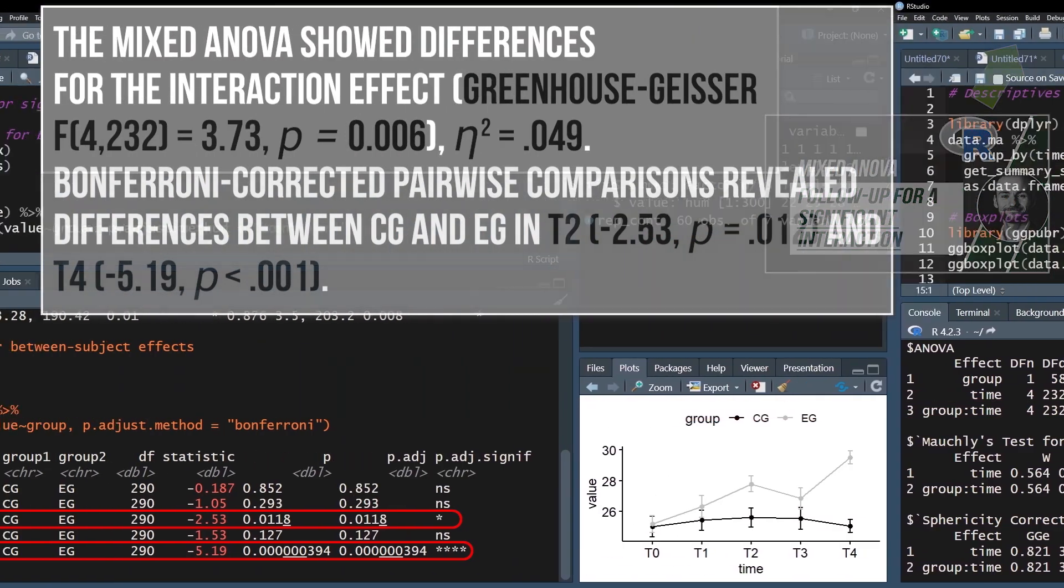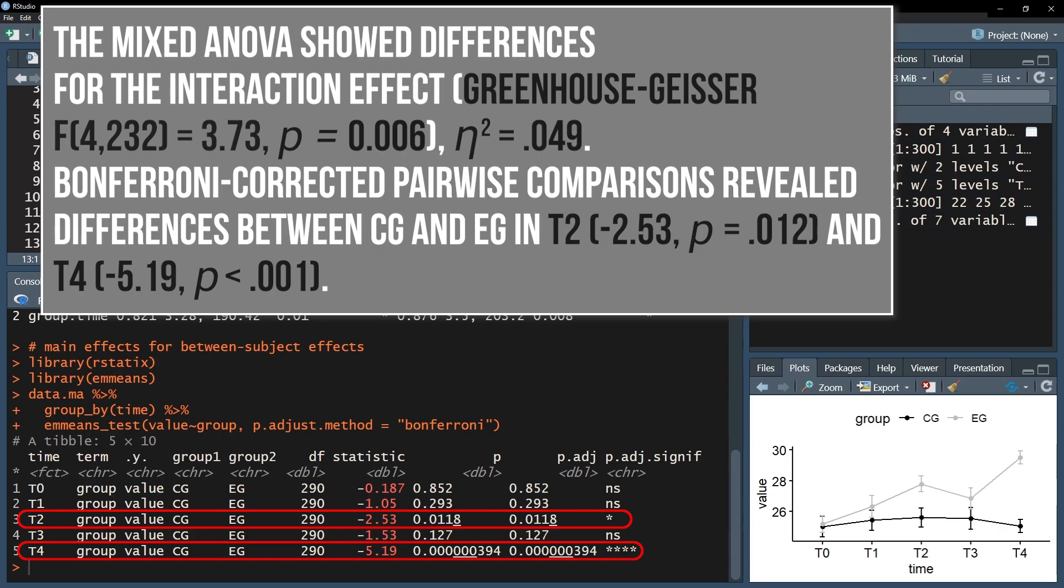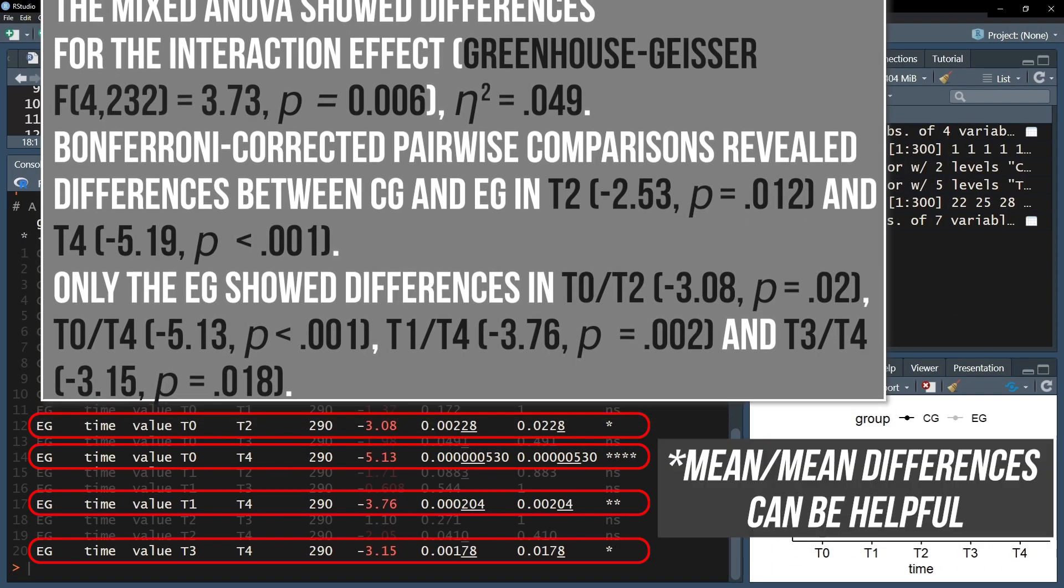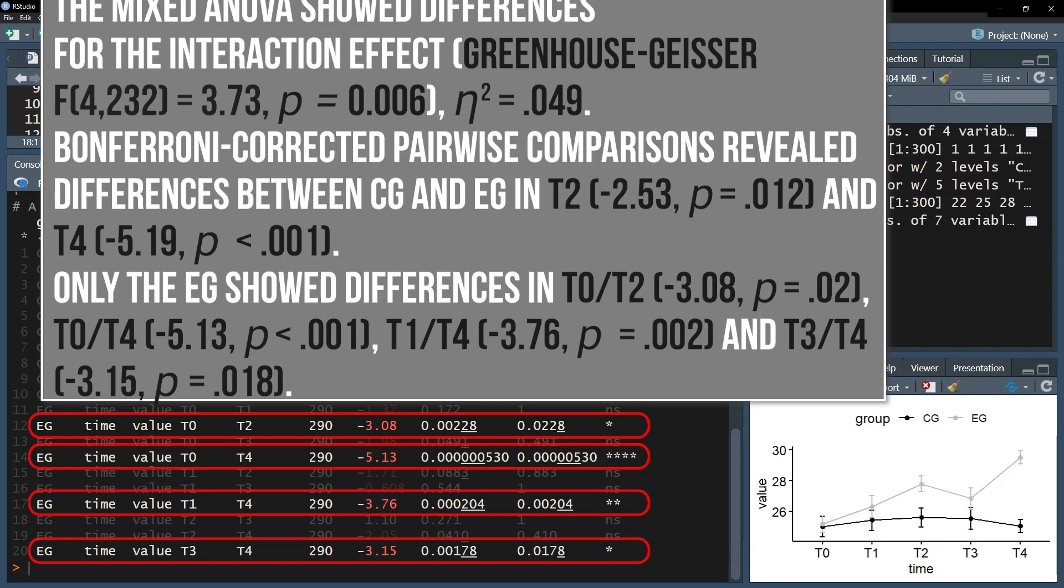Depending on if you calculated estimated marginal means for a significant interaction effect, you can add mean and SD for comparisons that showed pairwise differences. Be aware though that some reviewers will still insist on main effects being reported despite them being rendered kind of useless when the interaction effect turned out to be significant.